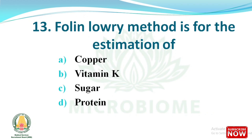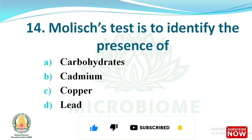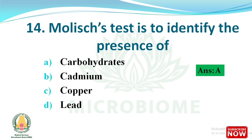Next question: the Lowry method is for the estimation of which of the following? The options are copper, vitamin K, sugar, protein. The right answer is option D, protein. Next question: the Molisch test is to identify the presence of which of the following? The options are carbohydrates, cadmium, copper, lead. The right answer is option A, carbohydrates.